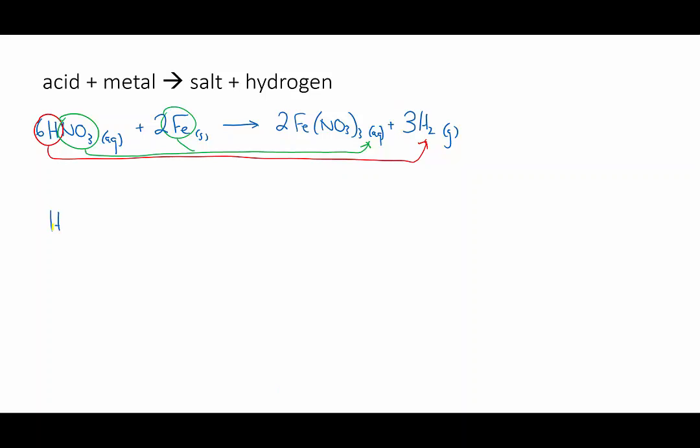How about another? Sulfuric acid reacting with magnesium. One product is hydrogen, and the other will be made from the metal and the acid anion, so magnesium sulfate.